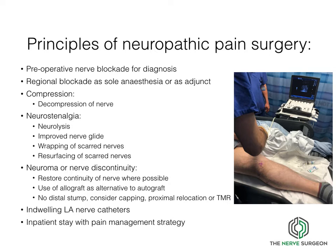Nerve blocks should be performed with close supervision from the potentially treating surgeon, usually done with the anaesthetic team using ultrasound and regional anaesthetic blockade. They are also used as an adjunct to any surgical intervention, sometimes with indwelling pain catheters. The types of surgery include decompression of peripheral nerves, neurostinalgia — releasing scar tissue to allow nerve glide to improve — and wrapping of scarred nerves with new membranes or synthetic membranes. Neuroma or nerve discontinuity can be reconstructed using autograft or allograft. Indwelling nerve catheters are essential for perioperative management and sometimes patients will need an inpatient stay.